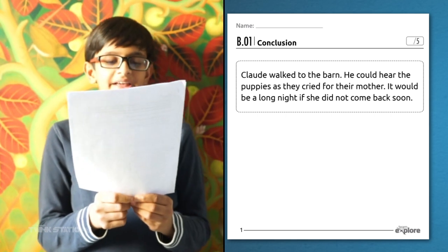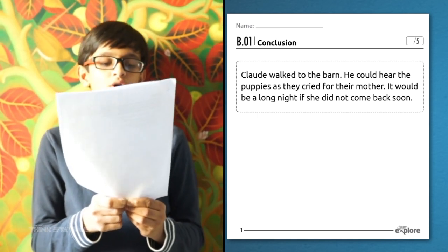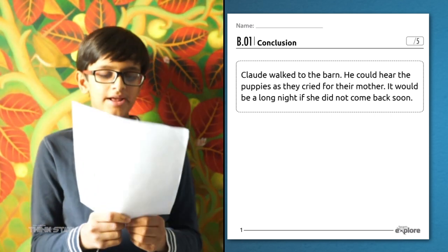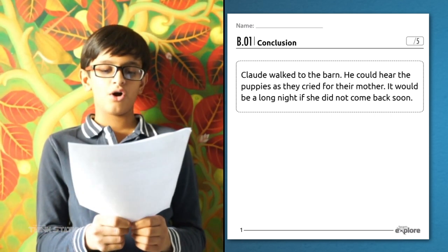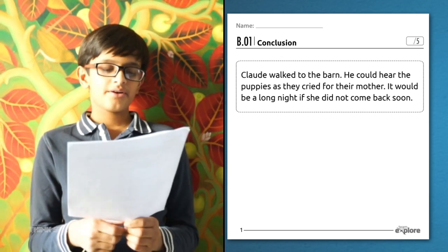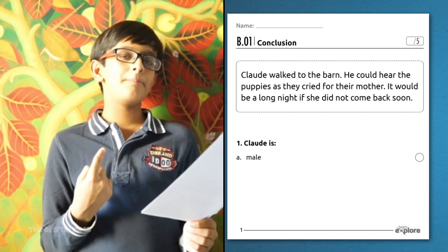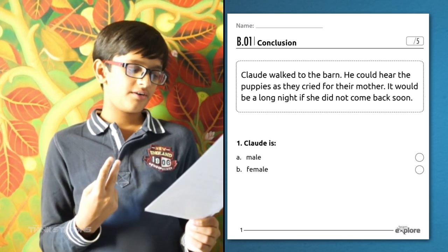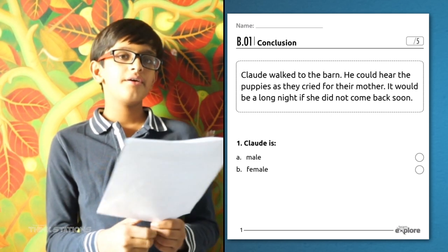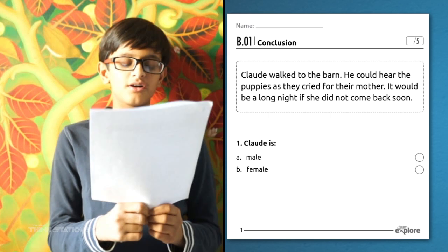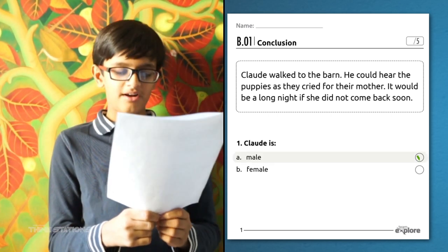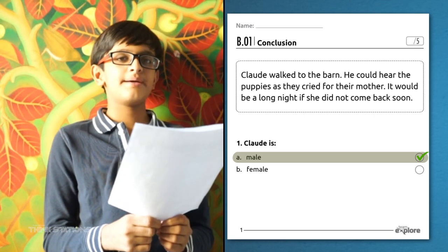Rob walked to the barn. He could hear the puppies as they cried for their mother. It would be a long night if she did not come back soon. Okay, the question is, Claude is A male or B female? You can easily conclude that Claude is male as the text refers to him as he.